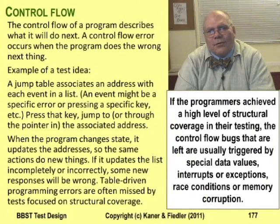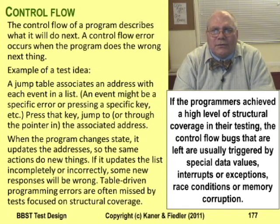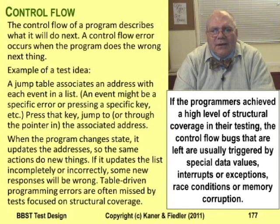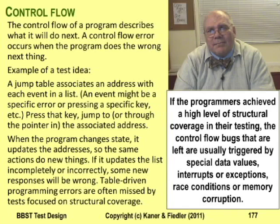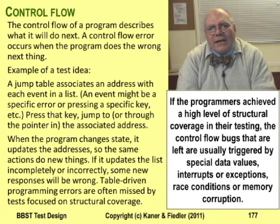The control flow of a program describes what it's going to do next. A control flow error happens if it does the wrong thing next. You might find it useful to pull down all the menus and try every visible option. If the programmer hasn't run the basic control flow tests, this tour of the user interface controls will probably find some bugs. But don't be surprised if these tests don't find much. I'd rather use glass-box techniques and code inspections to find most of them.